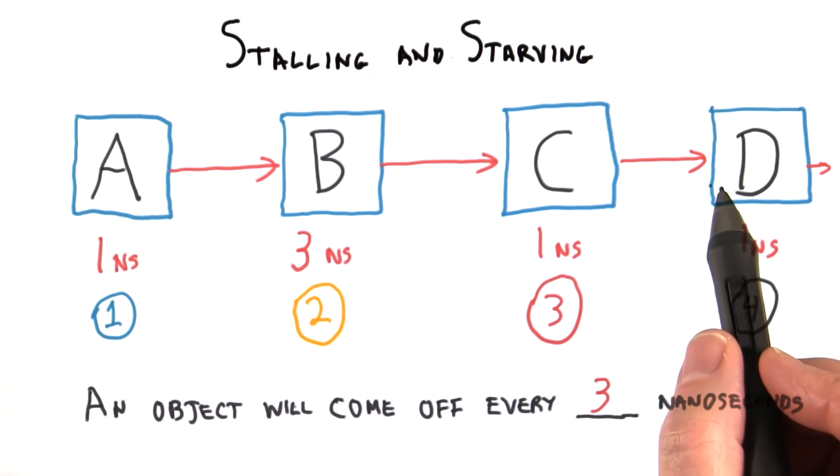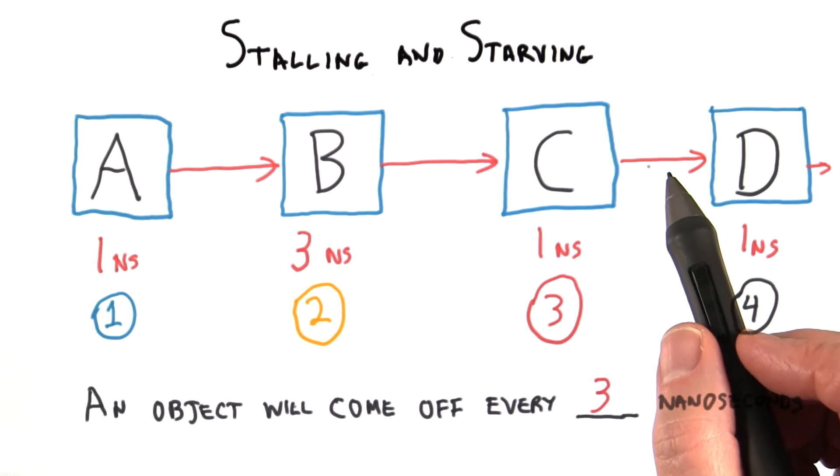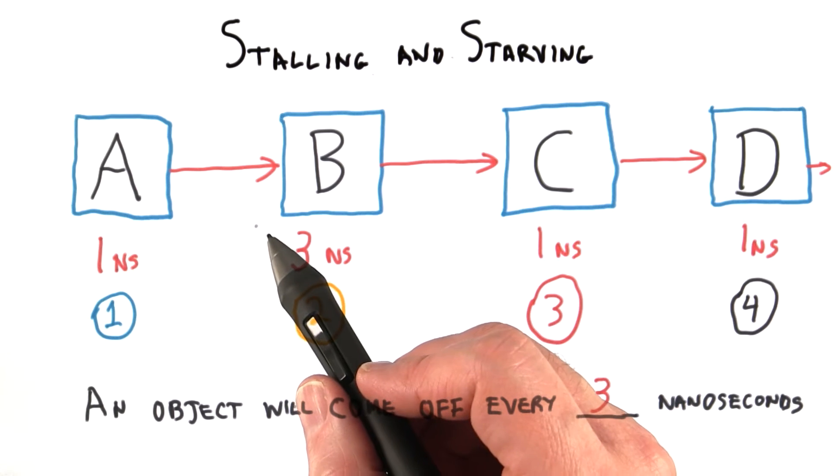With the rendering pipeline, these same sorts of principles apply. Having the application run efficiently and keep the GPU fed with data is a common bottleneck, for example.